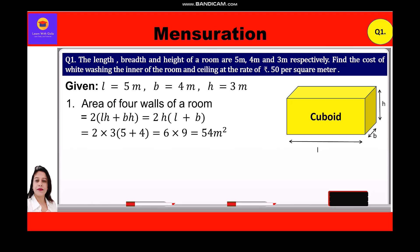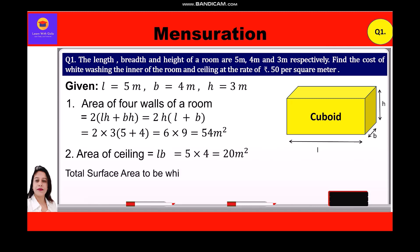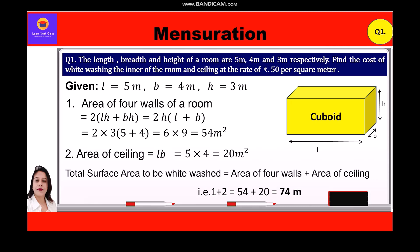Now we shall find the area of ceiling, which is equal to L × B = 5 × 4 = 20 square meters. Total surface area to be whitewashed = area of 4 walls + area of ceiling = 54 + 20 = 74 square meters.